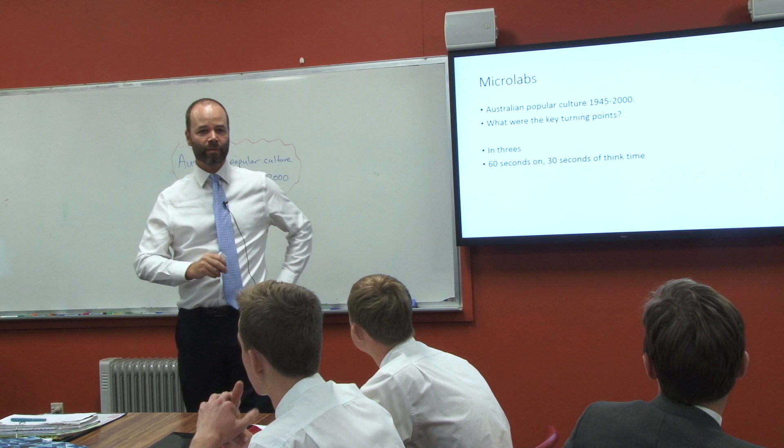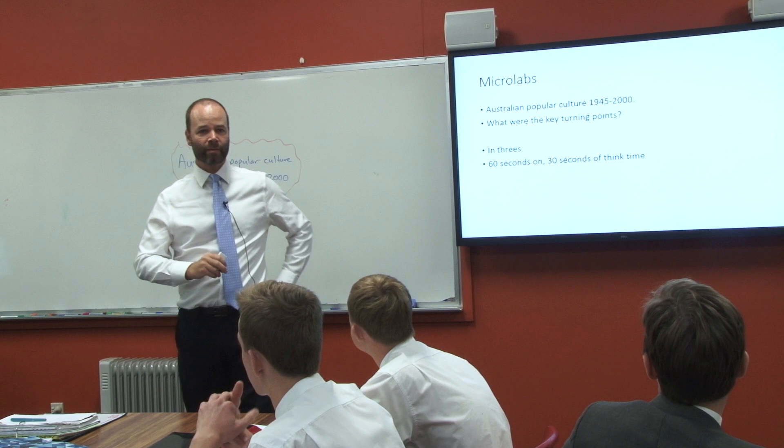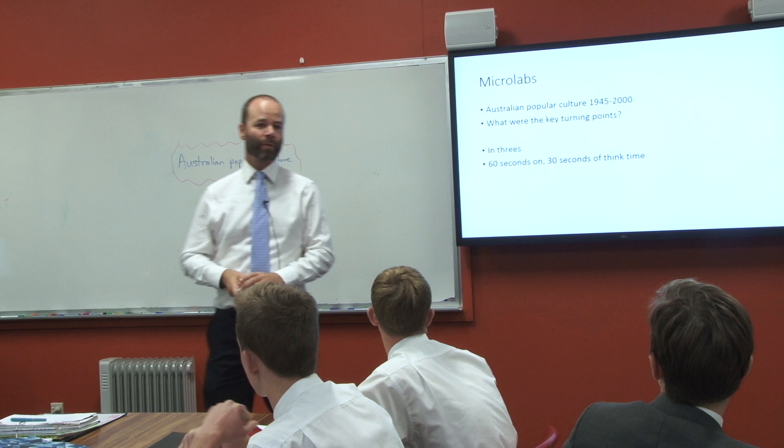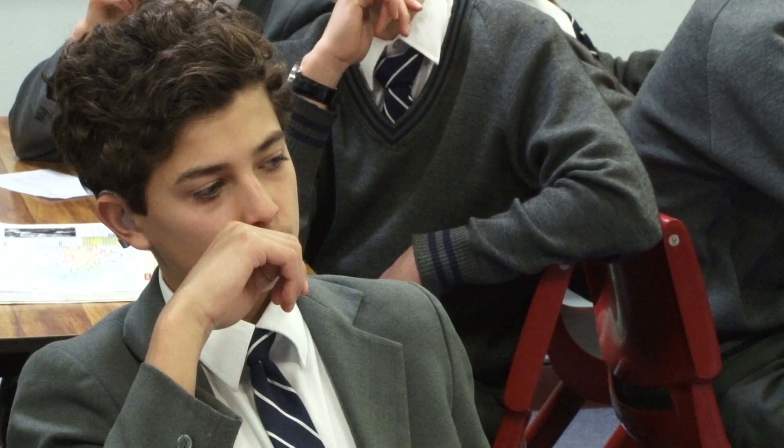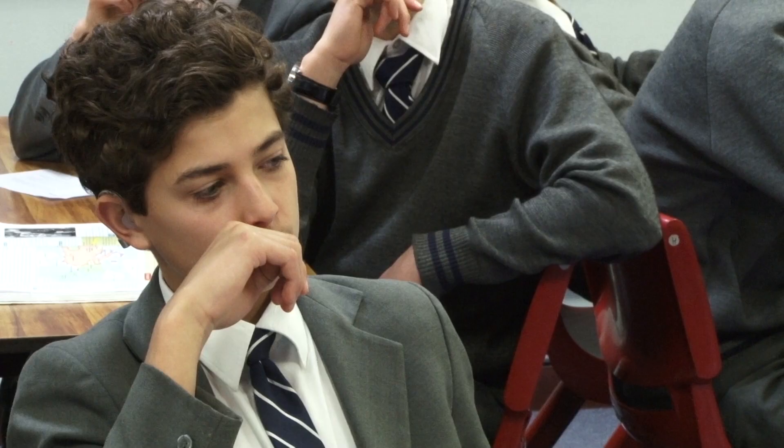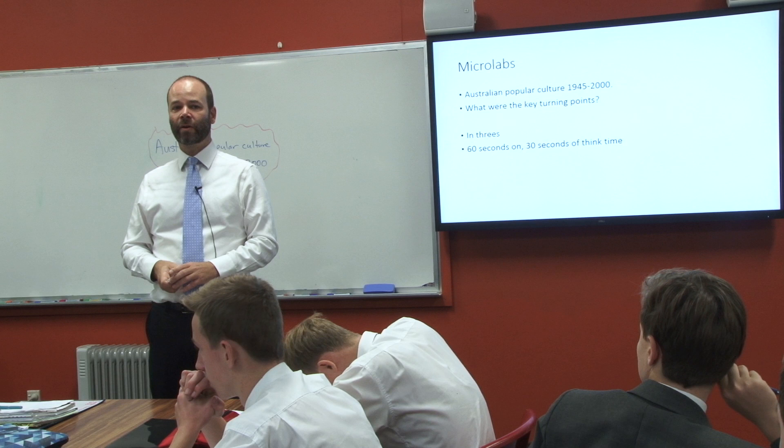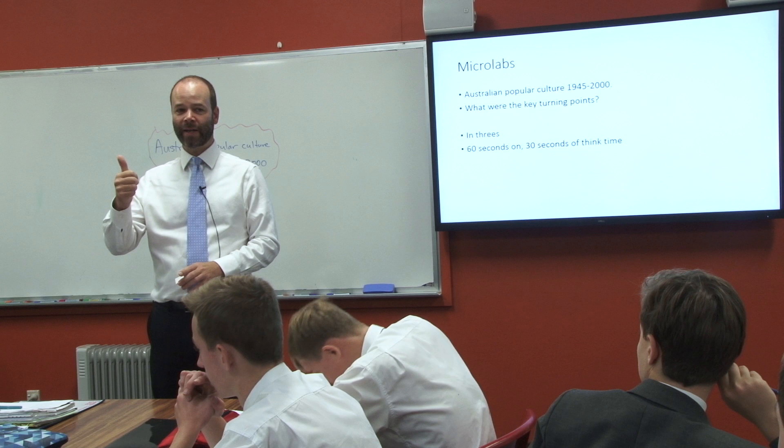We're going to have two rounds. For the first round, everyone will speak for 60 seconds about that topic — Australian popular culture, 1945 to the year 2000. One person speaks for 60 seconds, then there's 30 seconds of reflection. When I say go, get into threes. A is the shortest person, C is the tallest person. Go.